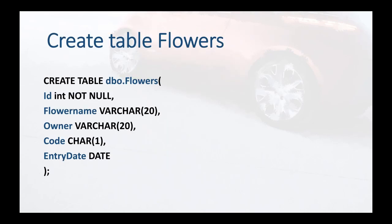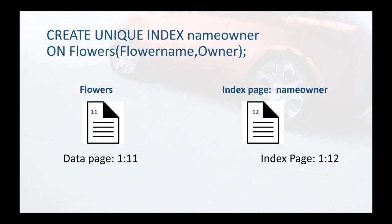Let's go ahead and create our table — a brand new table called 'flowers'. We're creating it with columns: ID, flower name, owner, code, and entry date. This table is a heap table, meaning we do not have any clustered index on top of it. Since we do not have a clustered index, we can go ahead and create a non-clustered index on top of this table.